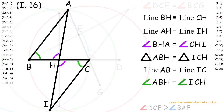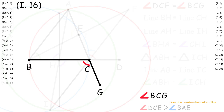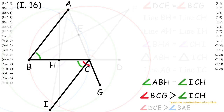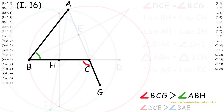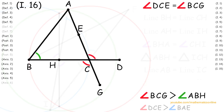Next, looking at angle BCG, by Axiom 5 it is greater than angle ICH. Now since angle ABH is congruent to angle ICH, then by Axiom 5 angle BCG is also greater than angle ABH. Since angle DCE is congruent to angle BCG, then by Axiom 5 angle DCE is greater than angle ABH.